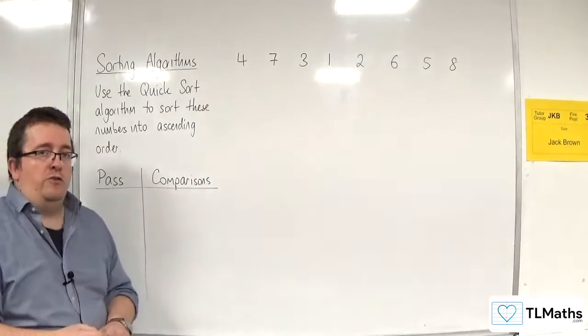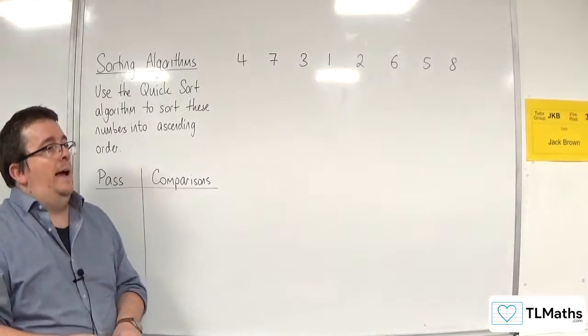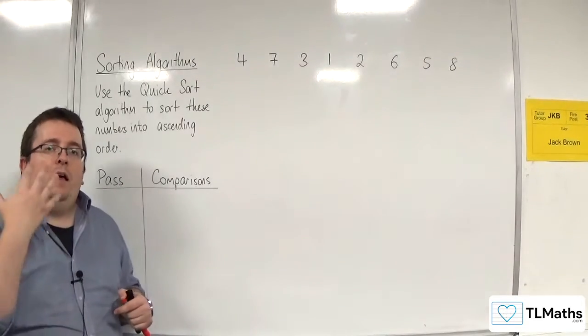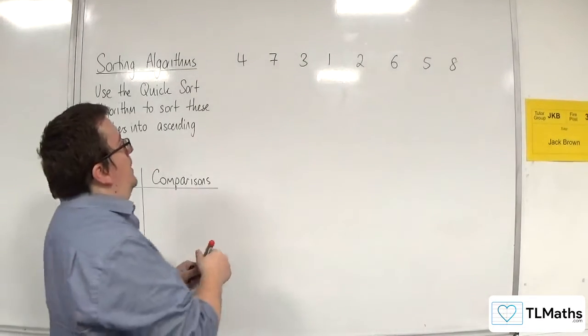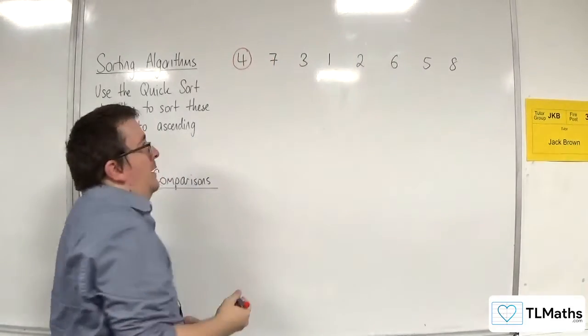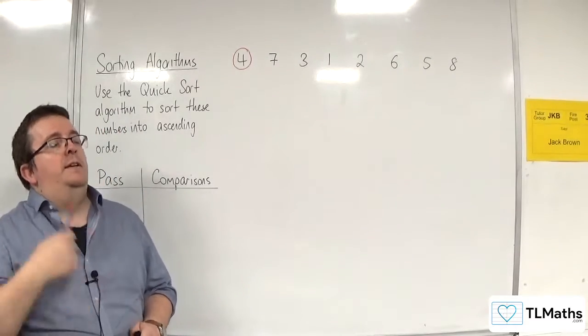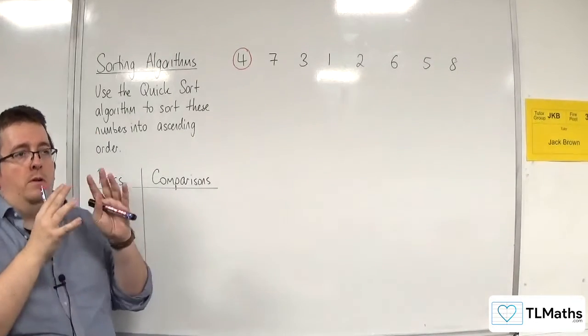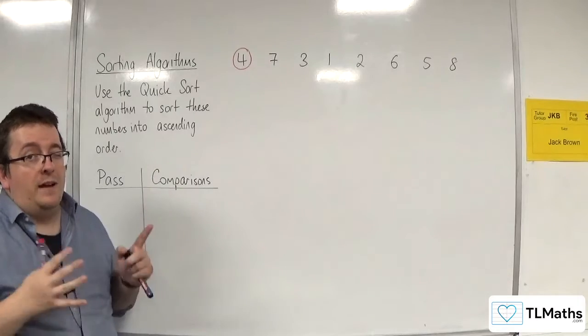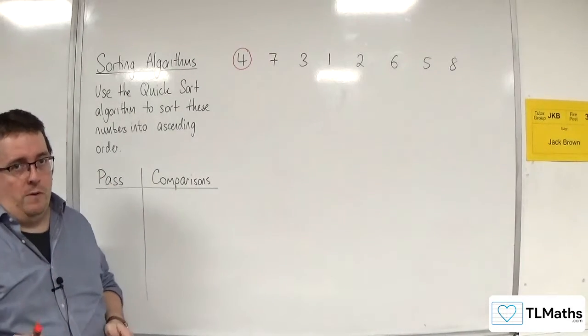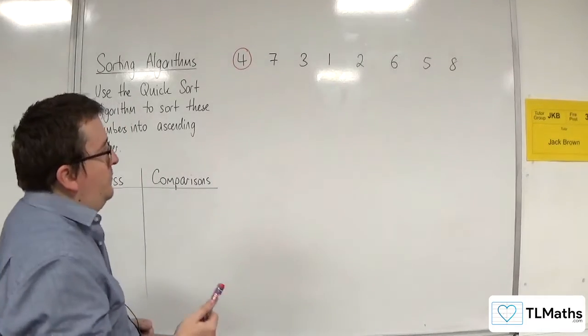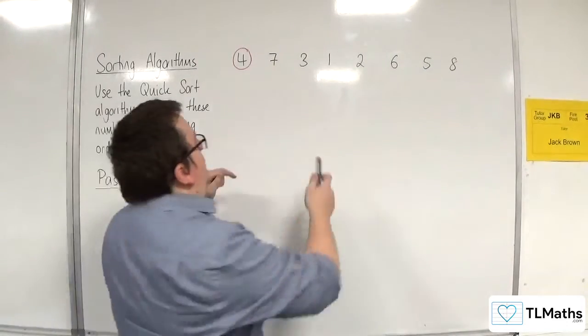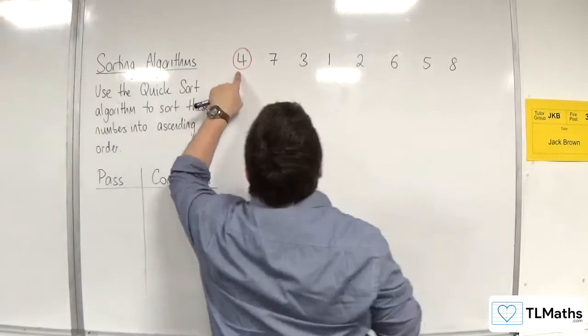So how does the quicksort algorithm work? Well, it relies on pivots, and we use the first number in each sublist to be the pivot. Now, what does that mean in the initial case? Well, it means that I'm going to choose four as the pivot, and I circle the pivot. Different people have different ways of writing this down. Some people will underline it, some people will put maybe two lines either side, but I find that quite confusing. I will use circles to represent the pivot. So the pivot that's being used. I said it had to be the first number in a sublist. Well, our sublist is just the whole list at the moment. So four becomes the first pivot.